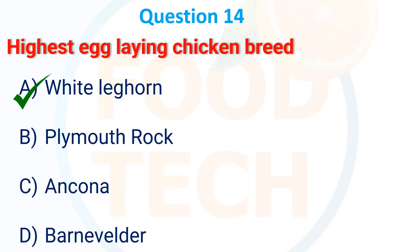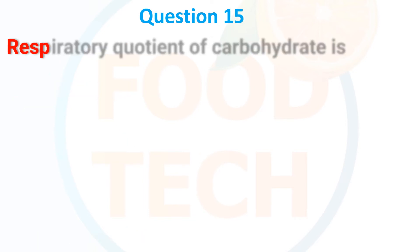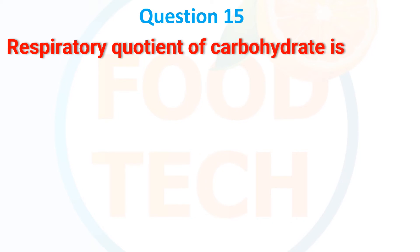Next MCQ: Which is the highest egg-laying chicken breed? Options: (A) White Leghorn, (B) Plymouth Rock, (C) Ancona, (D) Brahma Wyandotte. The correct answer is A — White Leghorn.